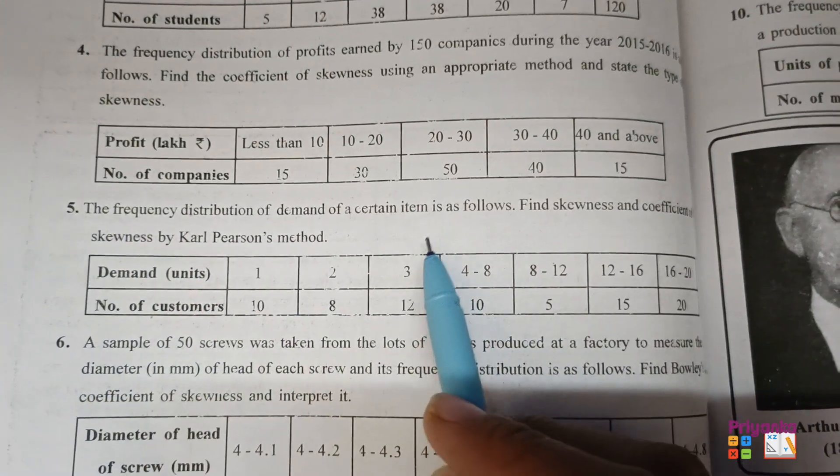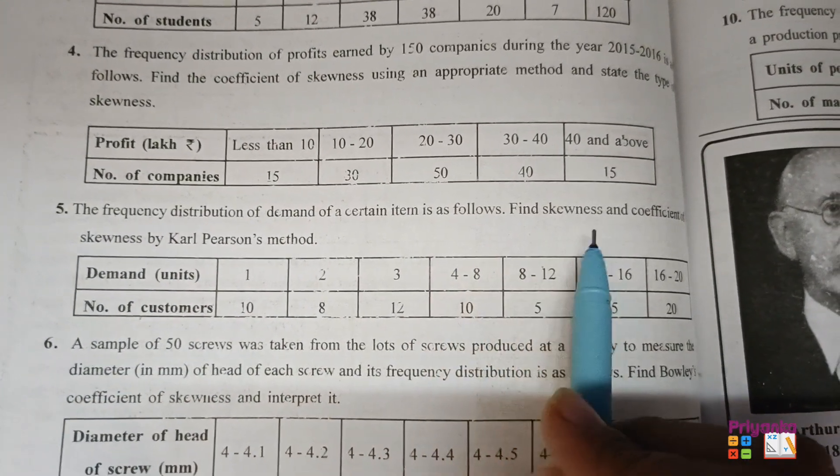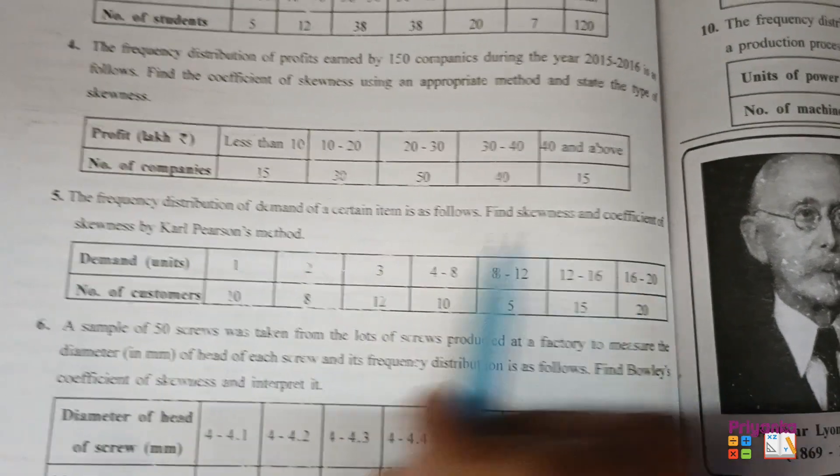Question number 5. The frequency distribution of demand of a certain item is as follows. Find skewness and coefficient of skewness.